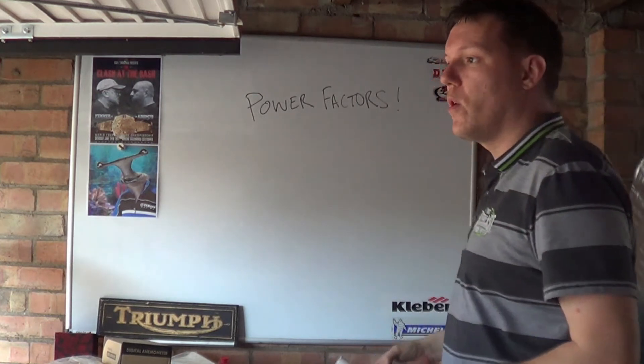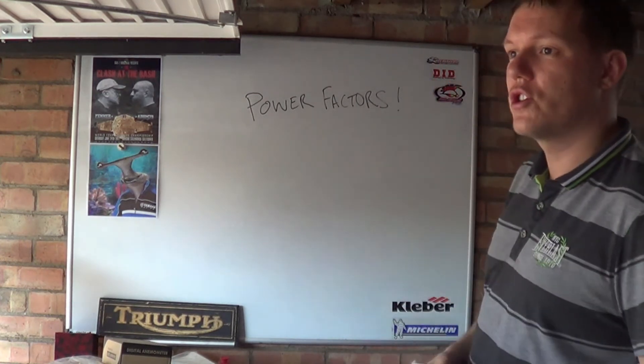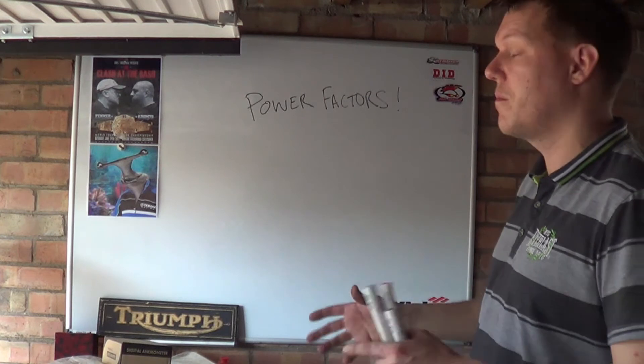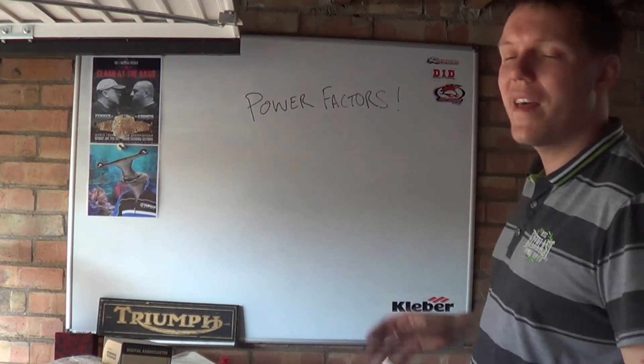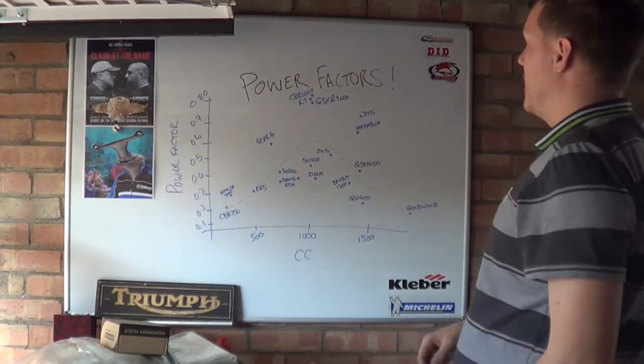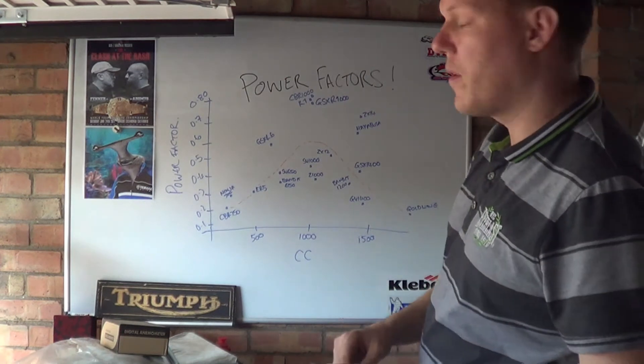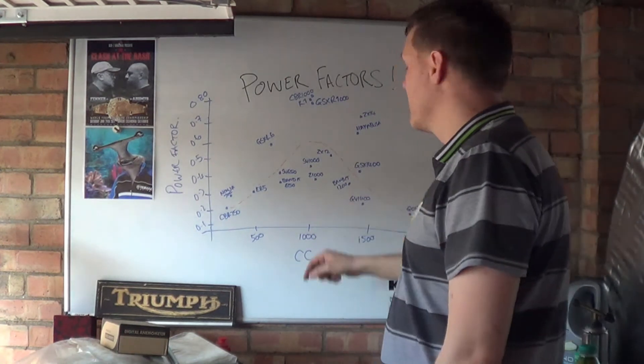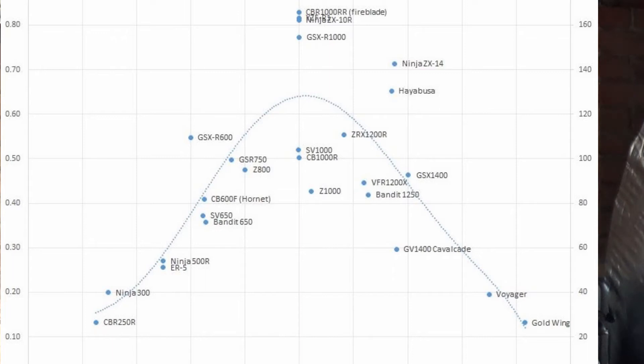So what I'm going to do now is put on the board, draw a little graph and just show you where some of the engines are, some of the motorcycles, where they sit on that actual graph. Right then, so here's our power factor graph. And I'll put a link in the description so you can have a look at the proper graph that I plotted out.